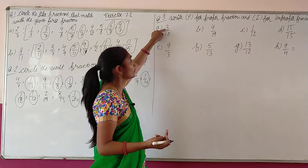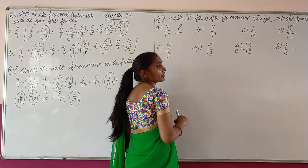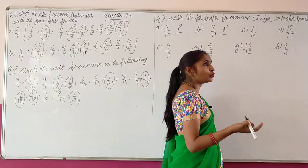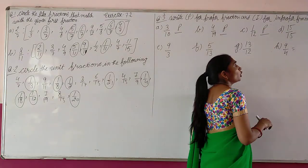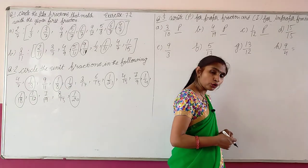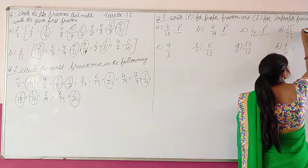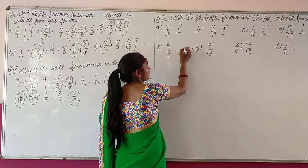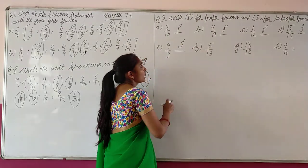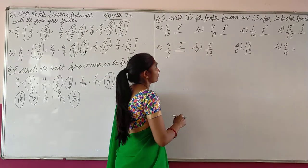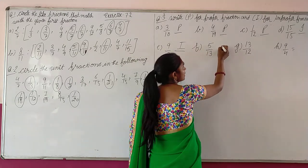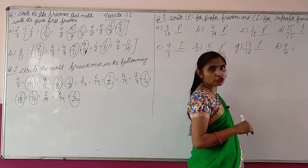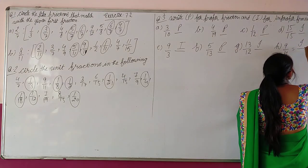3 by 10, numerator is smaller, toh proper fraction. B mein 4 by 19, yahan bhi numerator smaller hai, toh proper fraction. 1 by 12, yahan bhi numerator smaller hai, so proper fraction. Or improper fraction mein kya hota hai? Numerator is greater than or equal. Toh yahan equal hai, toh ye improper fraction. Greater than denominator, so improper fraction.